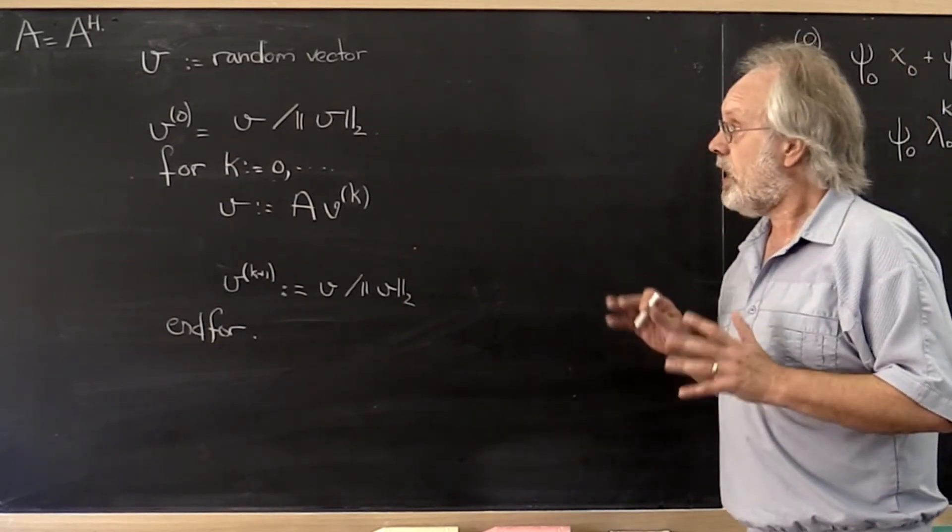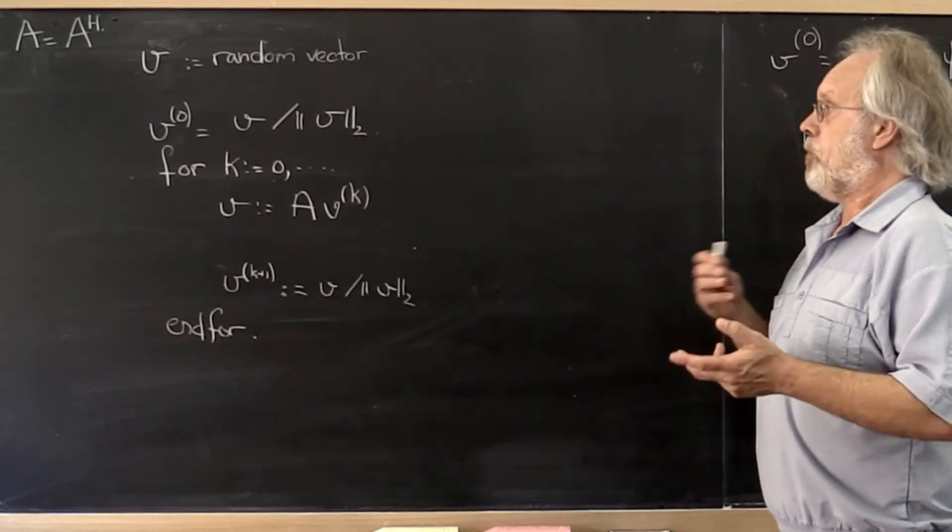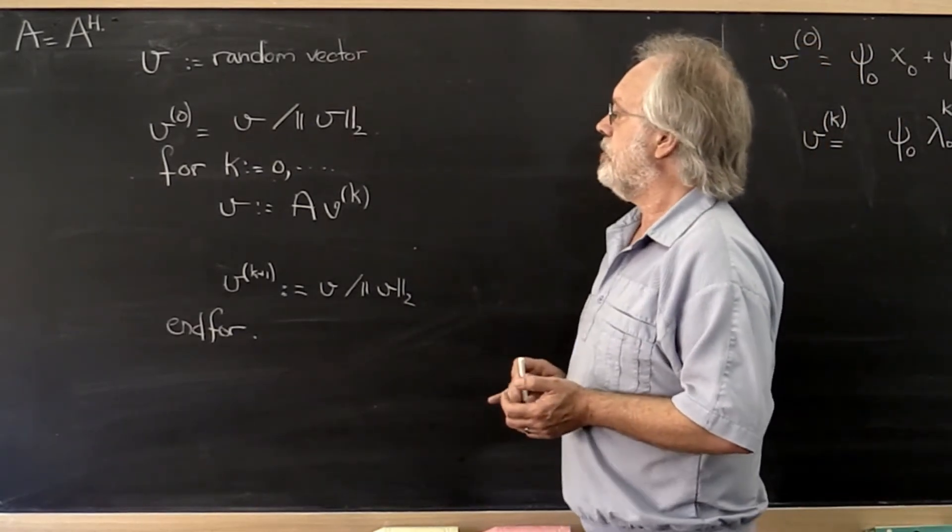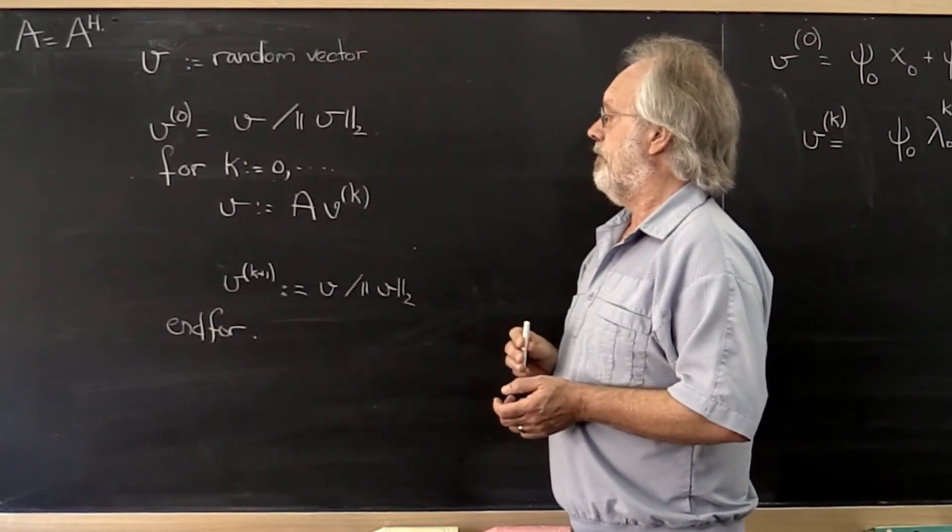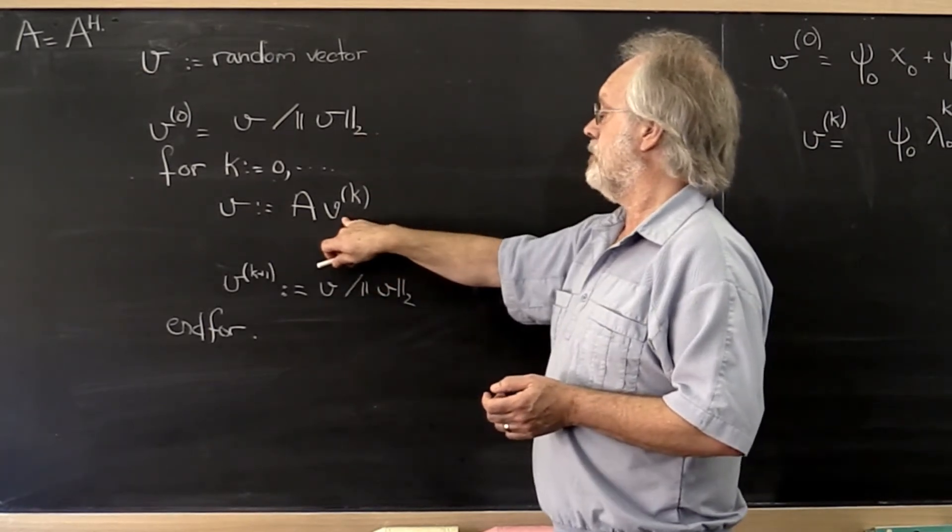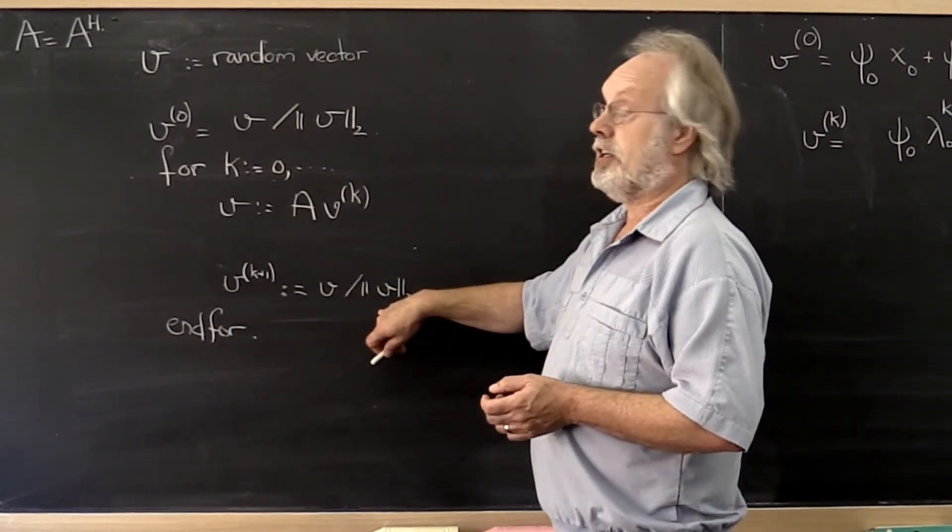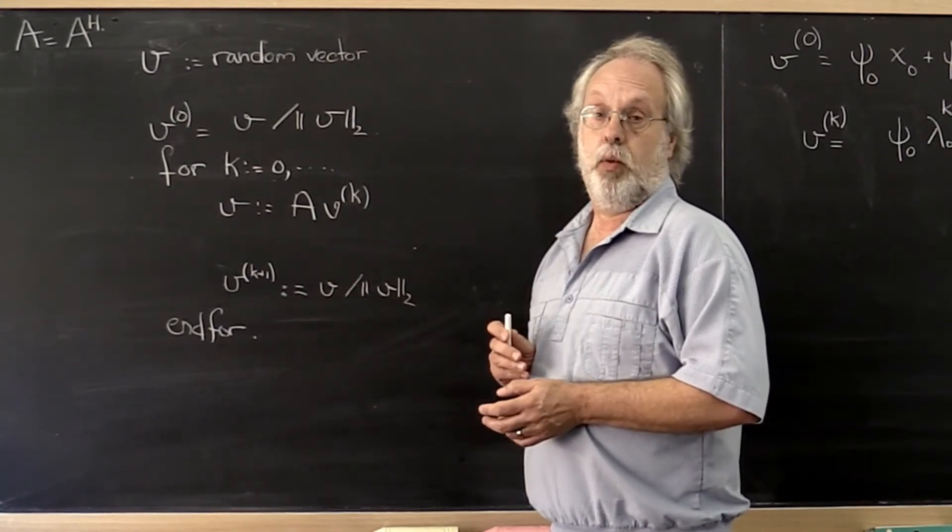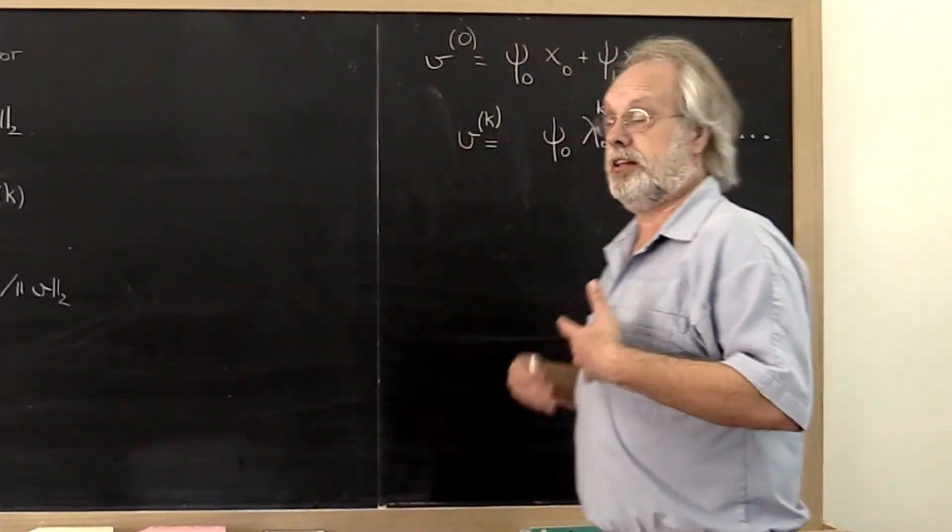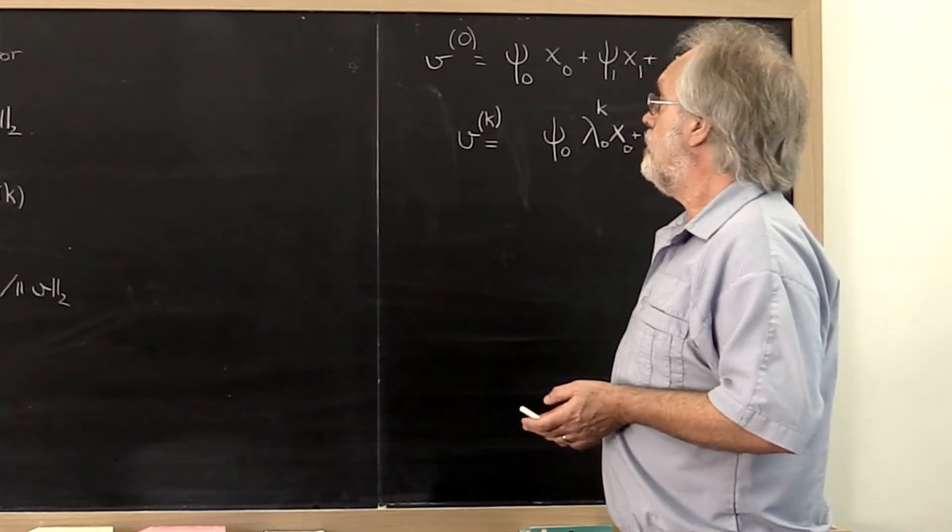So what do we have here? Well, here we have our generic power method. And what does the power method do? You start with some random vector. You normalize it to have length one. And then you start iterating where you hit that vector with the matrix A. And then you go and you normalize that vector back to having length one. And you just keep doing that. And how did we see that allow us to find the eigenvector associated with the largest eigenvalue in magnitude?